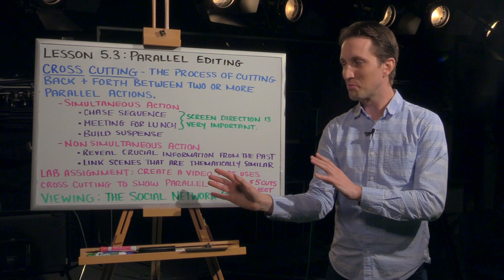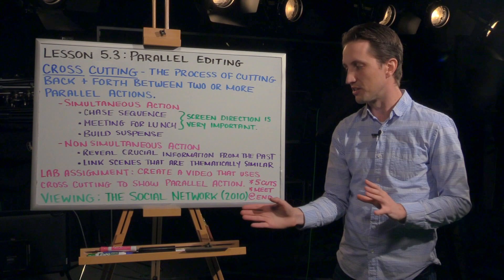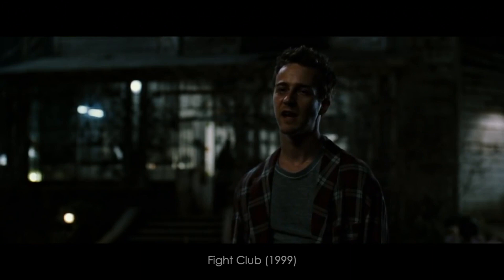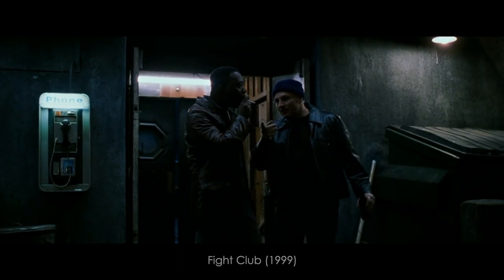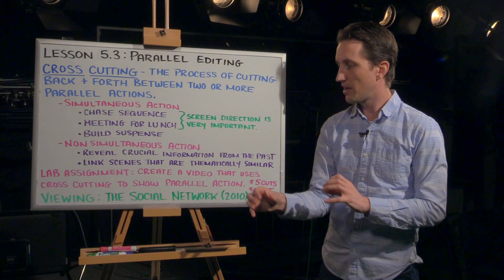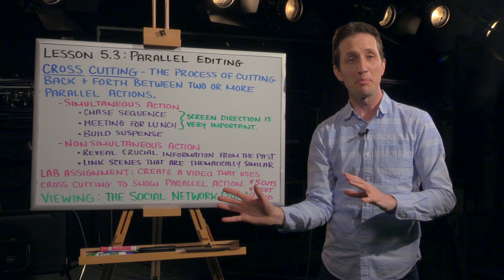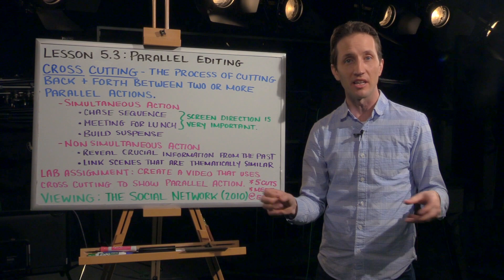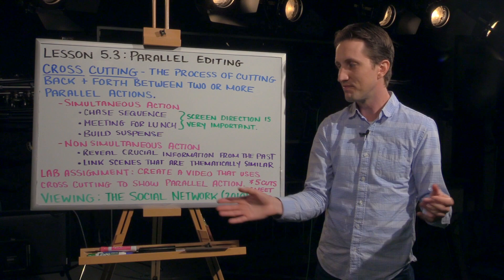You can also use parallel editing for non-simultaneous actions. Let's say you want to reveal some crucial information from the past, like we see in this example from Fight Club. For the sake of spoilers, I'm not going to play the audio from this scene, but we have Edward Norton's character and Brad Pitt's character talking in a hotel room, and we're constantly cutting back in time to these earlier events. These flashbacks are revealing crucial information to the audience. We see this type of editing a lot in movies where there's a big reveal at the end — the filmmaker shows you all of these past scenes to sort of blow your mind. Not very typical, but it is used.